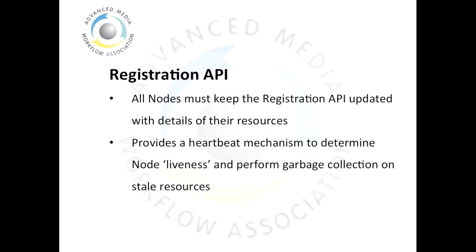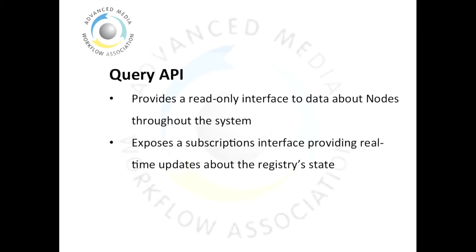The first of the APIs exposed by a registration and discovery instance is the registration API. All nodes in the system must keep the registration API updated at all times with details of the resources that they expose. Additionally, the registration API provides a heartbeat mechanism. Nodes must poll this resource regularly in order to maintain their presence in the registry system. Where the registration API provides a means to write into the registry, the query API provides a means to read from it.